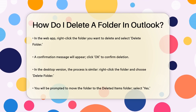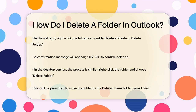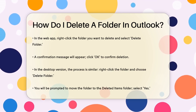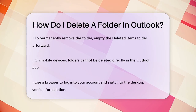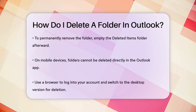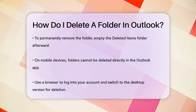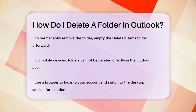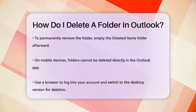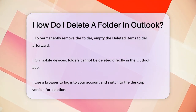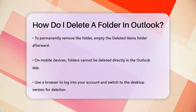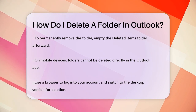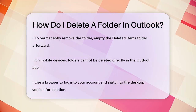In the desktop version of Outlook, the process is similar. Open your mail account, go to the folder pane on the left, right-click on the folder you want to remove, and select Delete Folder. You'll be asked if you want to move the folder and its contents to the Deleted Items folder. Choose Yes, and then you'll need to empty the Deleted Items folder to permanently remove everything.